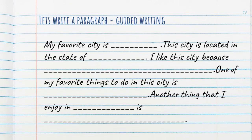Now I want you to do this in your notebooks. This is guided writing — I've given you incomplete sentences to complete. Write the heading 'Paragraph Writing — Guided Writing,' leave two lines, then write: 'My favorite city is [name of city]. This city is located in the state of [name of state].' I would prefer you write an Indian city and an Indian state, but you can write any city — there is no compulsion, that is just my preference.